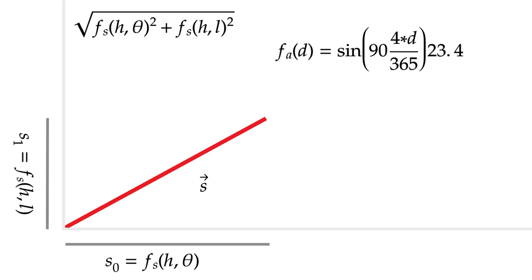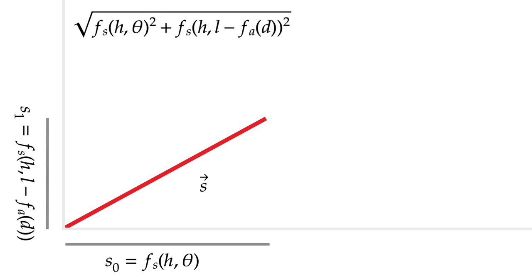Finally, subtracting from L, we get square root Fs H theta squared plus Fs H minus L Fa D, D squared. For H equals stick height, theta equals rotation long axis, L equals latitude, and D equals days since March equinox. We can write this as FG H theta L D.